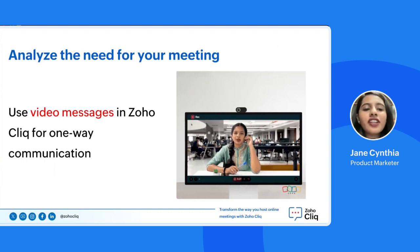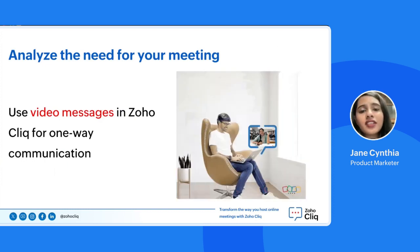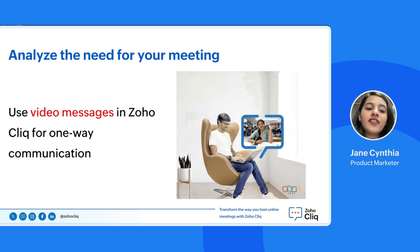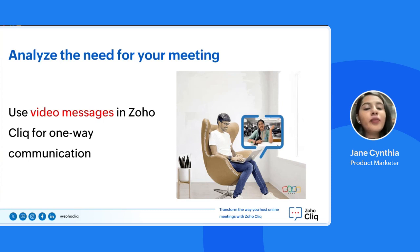Before scheduling a meeting, ask yourself: do you want participation, or is it going to be a one-way sharing of a critical message? If the message is one-way and doesn't require any visuals, rather than setting up a whole meeting, you can simply go with the video message option available on ZohoClick. But if you want engagement and participation, setting up a meeting gives you a better chance and more participation from the people.